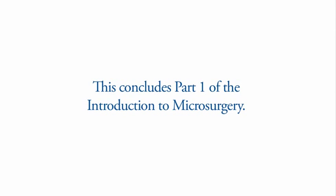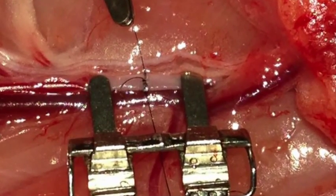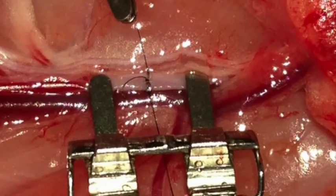This concludes Part 1 of the Introduction to Microsurgery. In Part 2, I will describe the steps of the femoral artery end-to-end anastomosis.